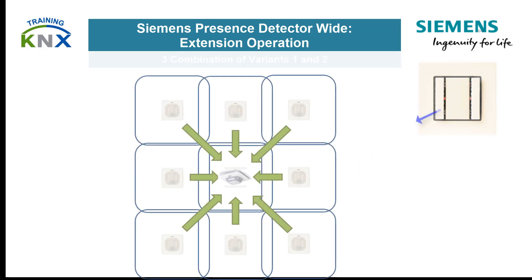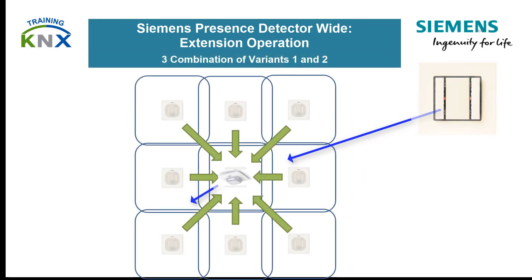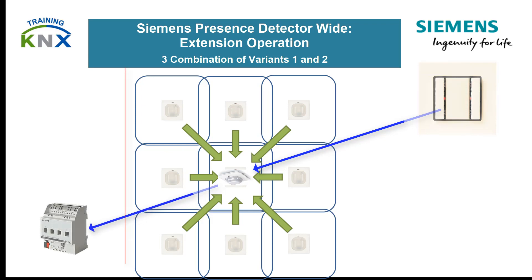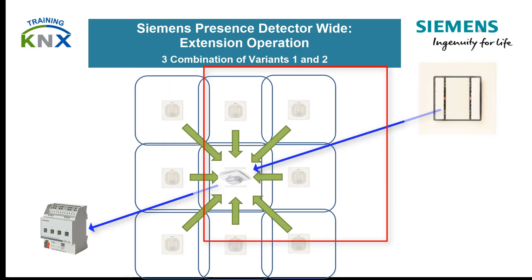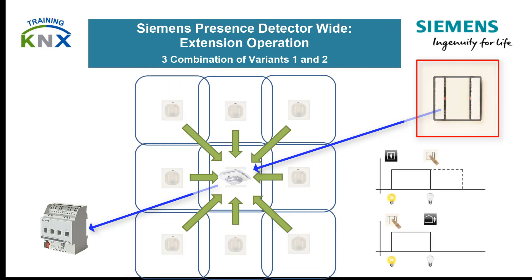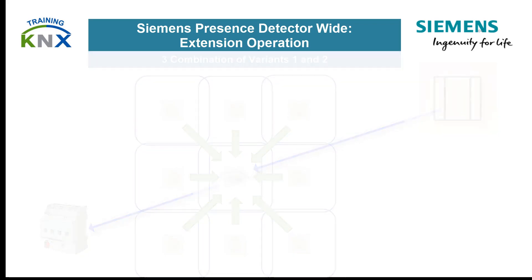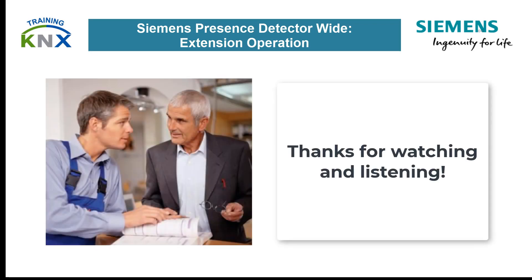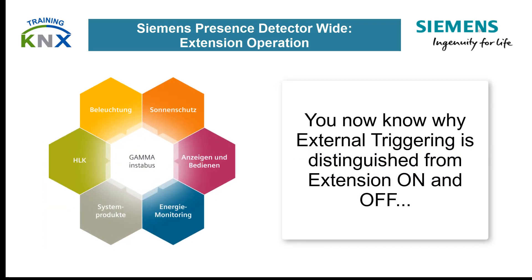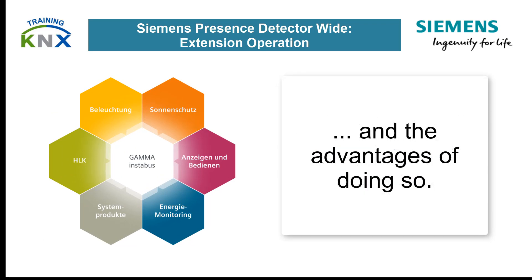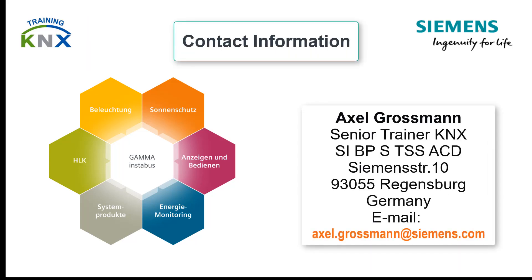Third variant: combination of variants 1 and 2. Because they are separate objects, both functions — the range extension and the semi-automatic with manual push-button operation for on or off — can be used side by side. This was not possible with earlier devices. We have reached the end of this video. Thanks for watching and listening. You now know why external triggering is distinguished from extension on and off, and the advantages of doing so. Stay tuned.